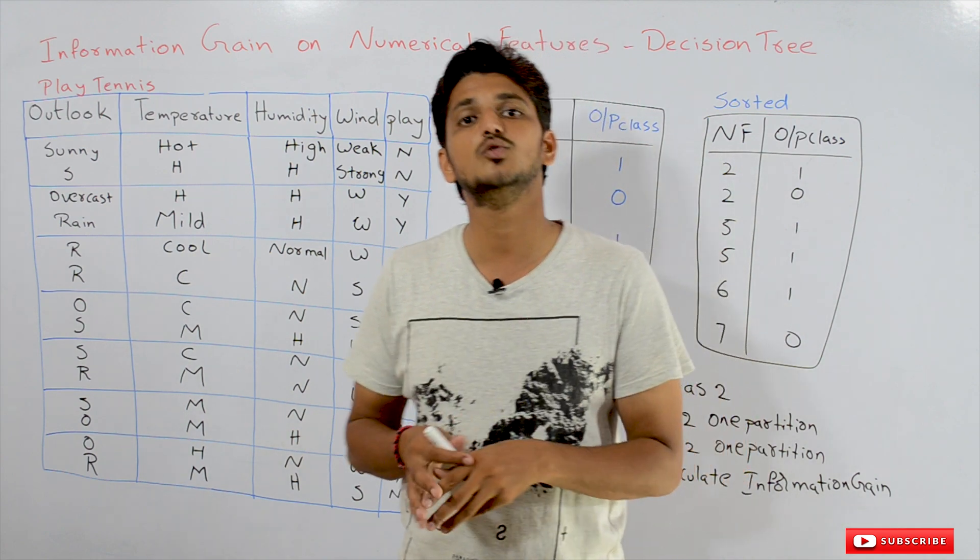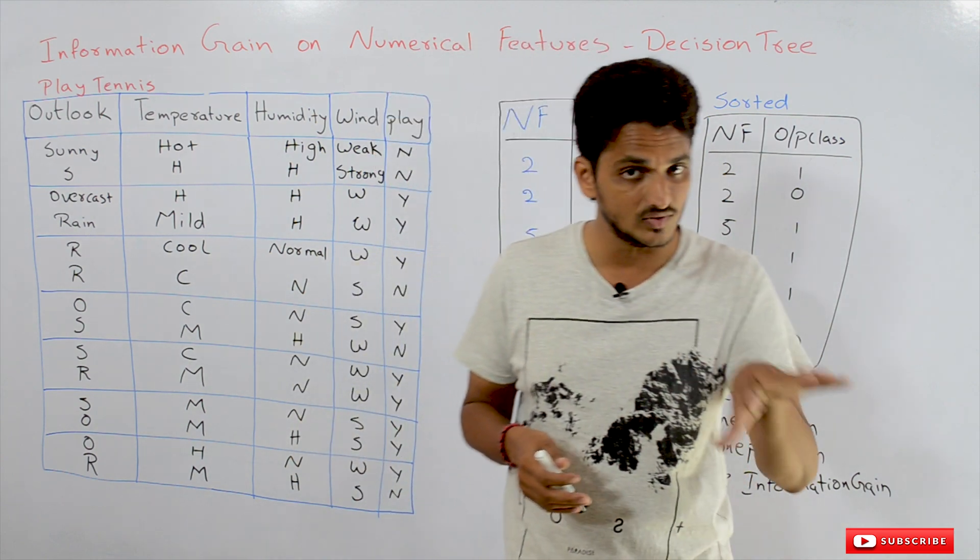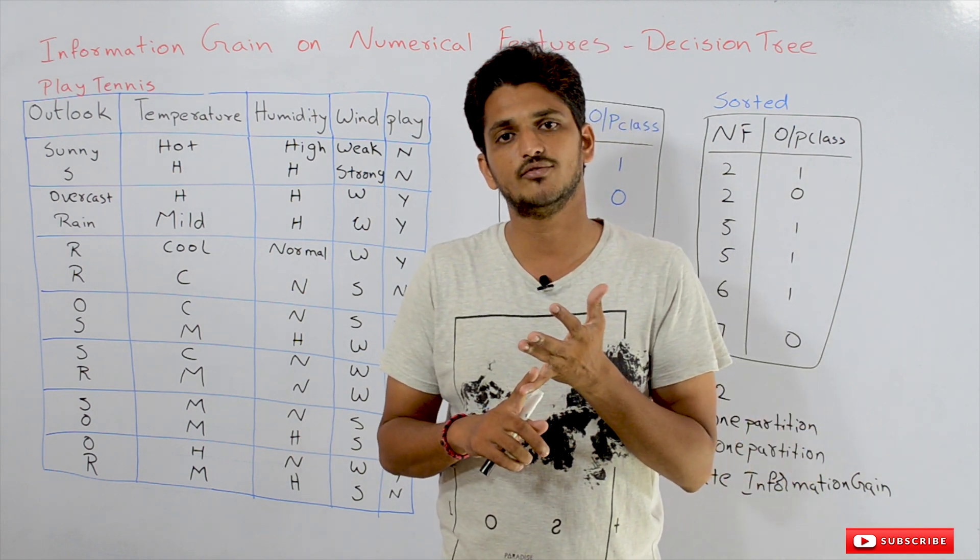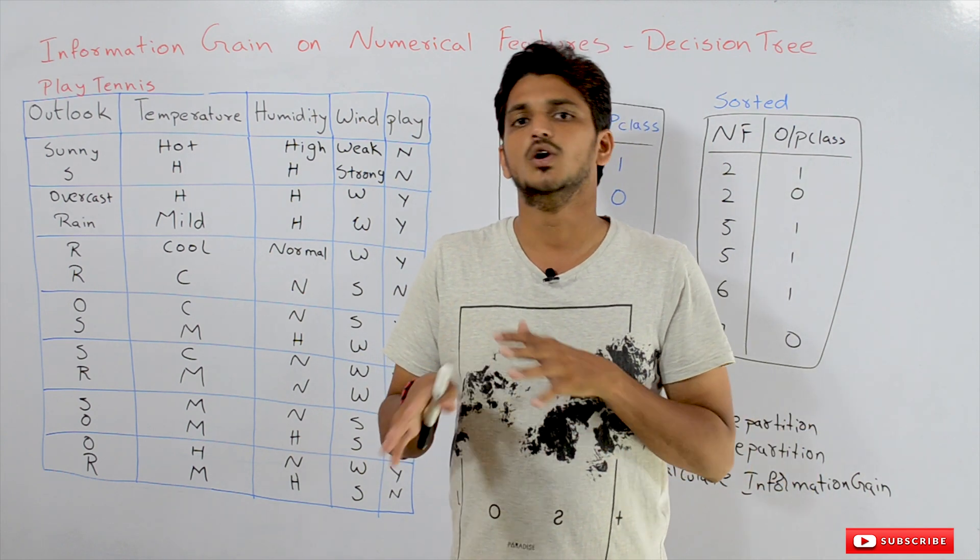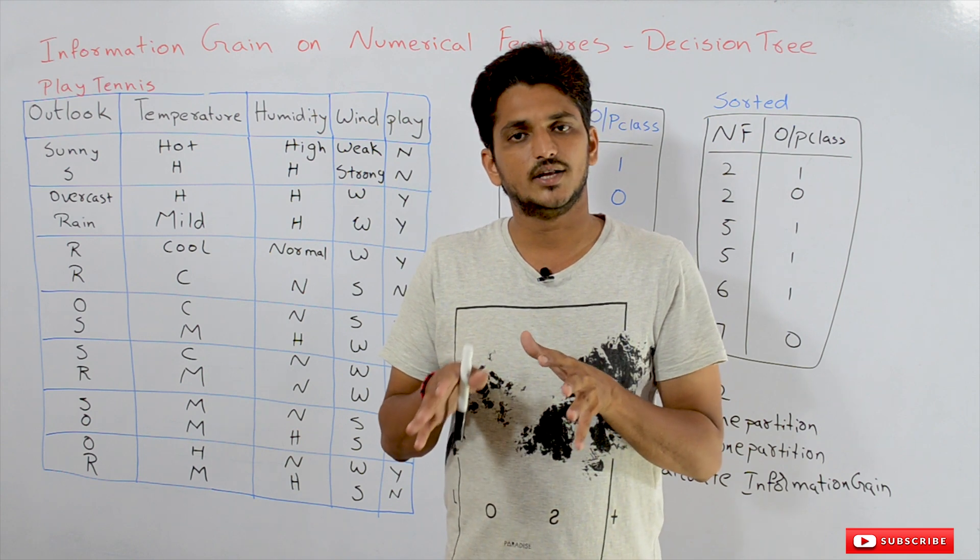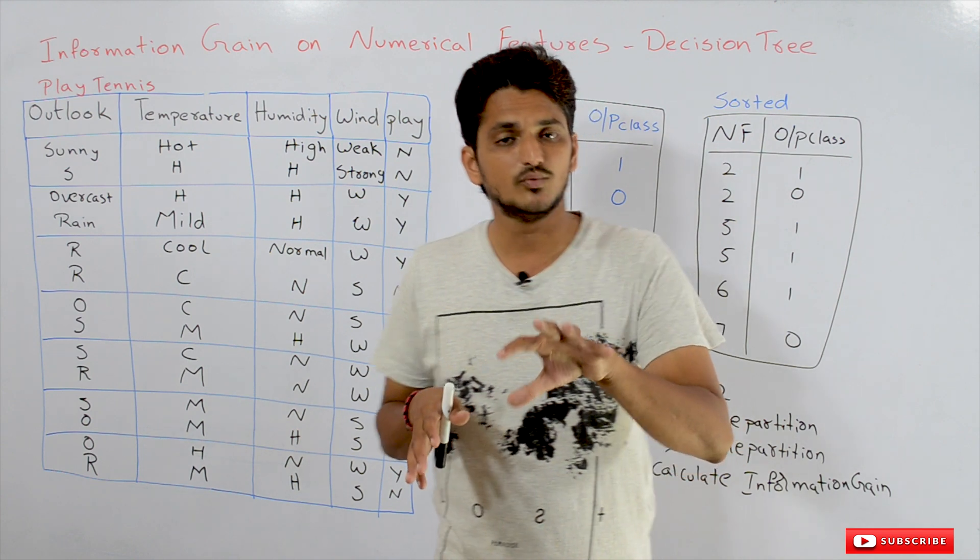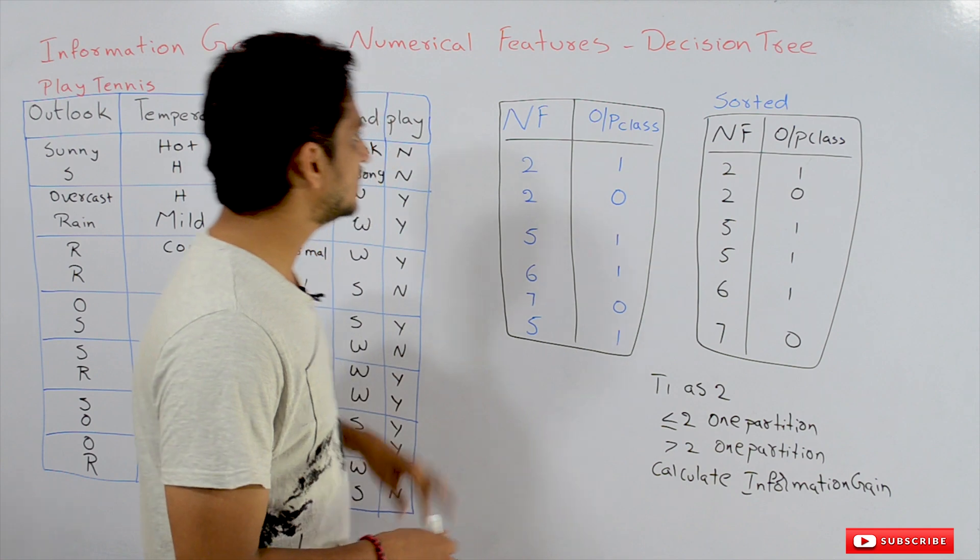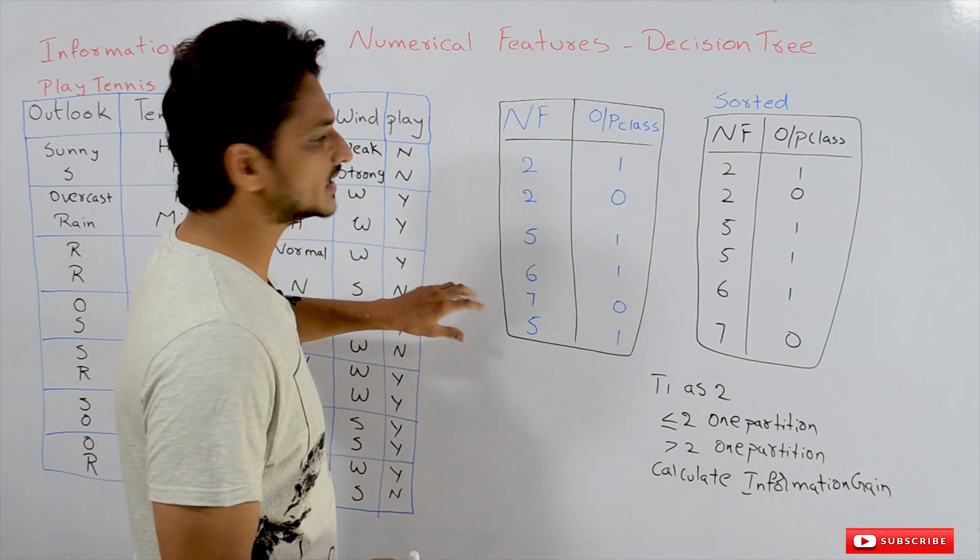We assume that you have already watched our previous classes, so you know how to calculate information gain and how to generate decision trees. Based on that assumption we are discussing this class. Let us take an example dataset.